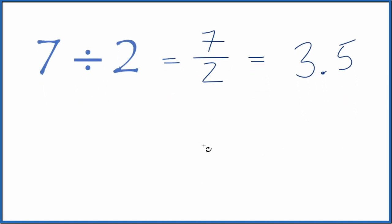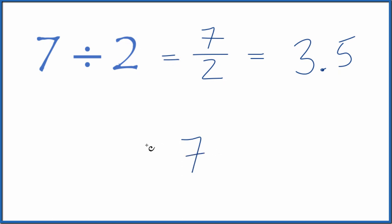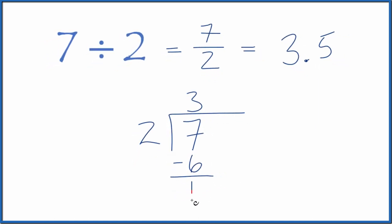You could also do this longhand. You could take 7 and see how many times 2 goes into 7. 2 goes into 7. 2 times 3 is 6. That leaves us with 1 left over.